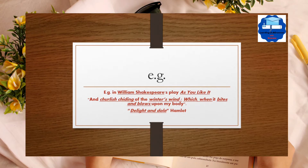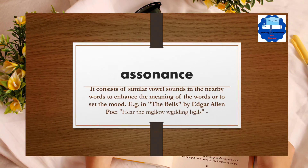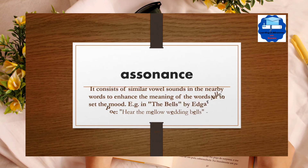Assonance consists of similar vowel sounds in nearby words to enhance the meaning of the words or to set them out. In Edgar Allan Poe's poem 'The Bells': 'Hear the mellow wedding bells.' Here the repetition of the 'E' vowel sound in three consecutive words is a fine example of assonance.